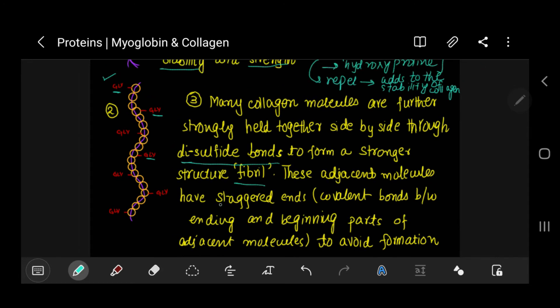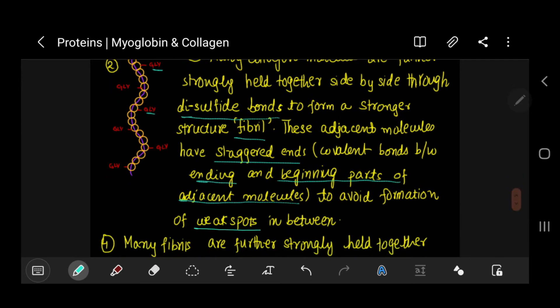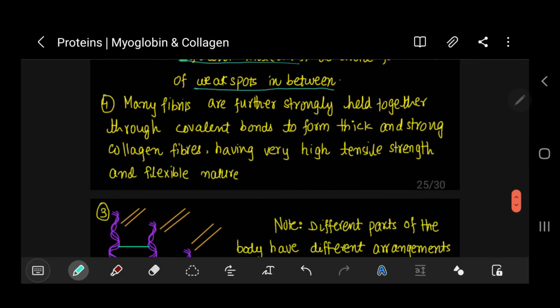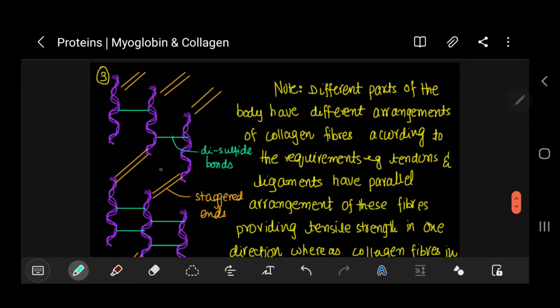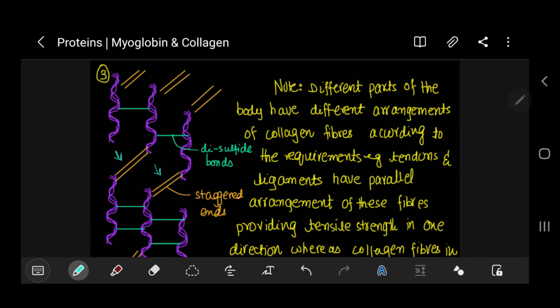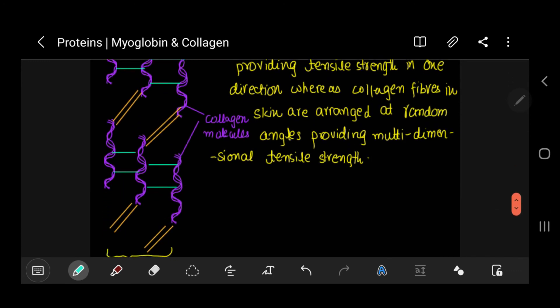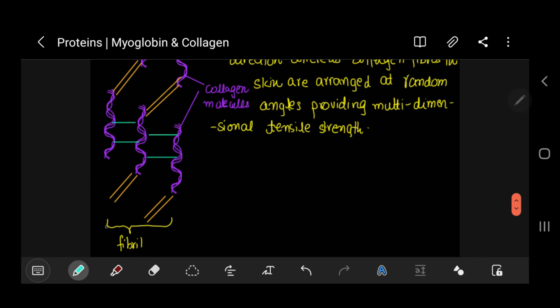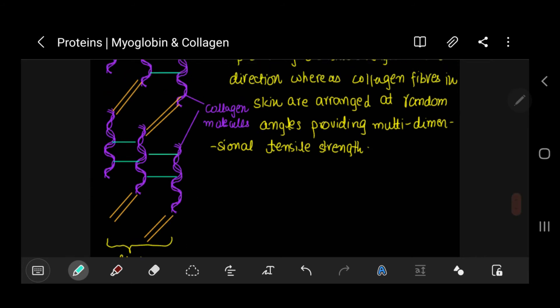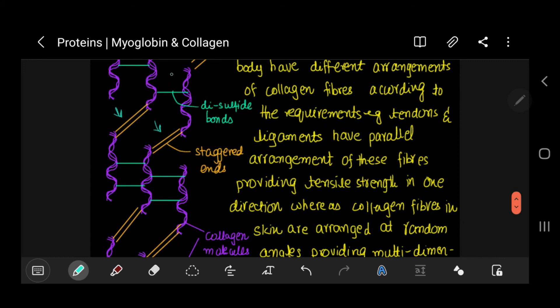These adjacent molecules have staggered ends, means covalent bonds between ending and beginning parts of adjacent molecules, and this is done to avoid formation of weak spots in between. You can see staggered ends between these triple helix structures. Collagen molecules are joined together to form this whole thing which is called a fiber, and these are your disulfide bonds.